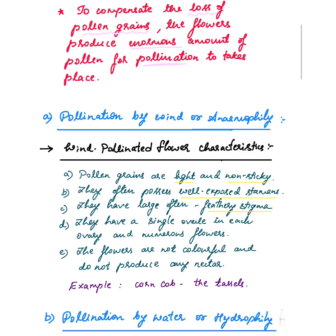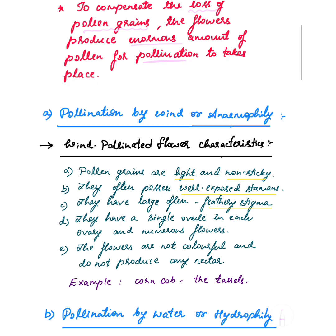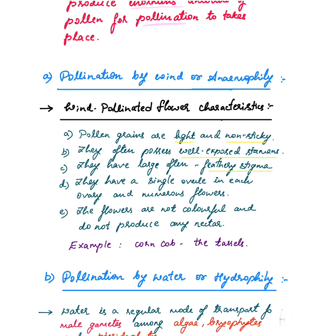Next, pollination by wind is called anemophily. The term anemophily means pollination by wind — 'anemo' means wind and 'phily' means type of pollination. Wind pollinated flowers have certain characteristics. First, pollen grains are light and non-sticky so that they can be transported in wind currents very easily.